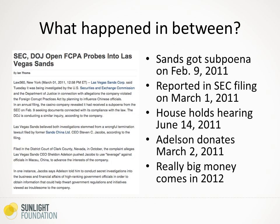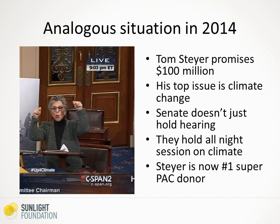So what happens between that November 30th hearing and the June 11, 2011 hearing? Sands gets a subpoena on February 9th — Sheldon Adelson's casino. On March 1st, they report this subpoena in a filing with the Securities and Exchange Commission. Then the House holds its June 14th hearing. Sheldon Adelson starts his round of 2012 cycle donating on March 2nd, but the real big money comes a year later in 2012. We haven't crunched the numbers for the 2014 cycle yet, but he basically said he would raise and donate $100 million for candidates who are strong on the issue he cares about — climate change.